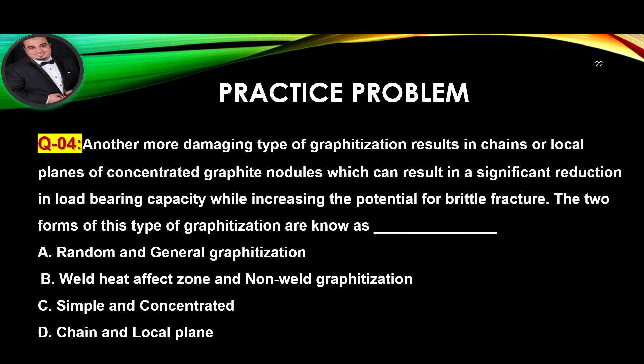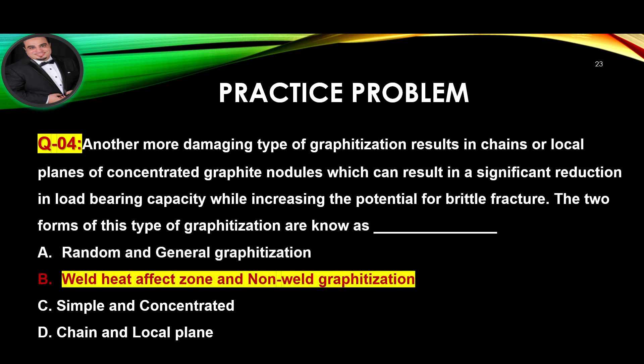Question 4: Another more damaging type of graphitization results in chains or local planes of concentrated graphite nodules, which can result in a significant reduction in load-bearing capacity while increasing the potential for brittle fracture. The two forms of this type of graphitization are known as... Answer is B.